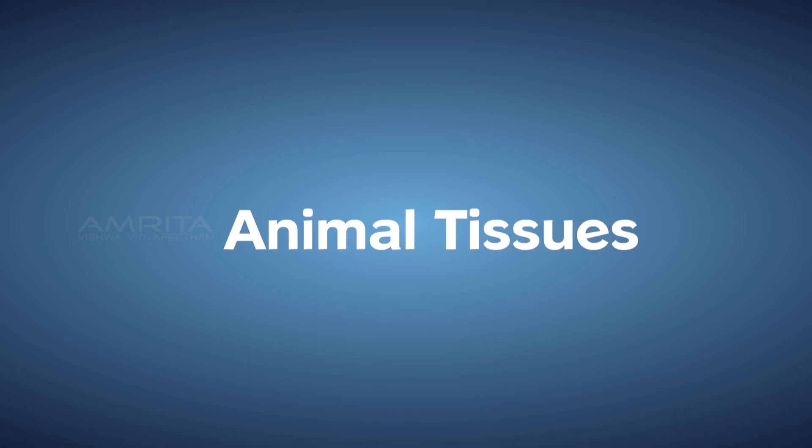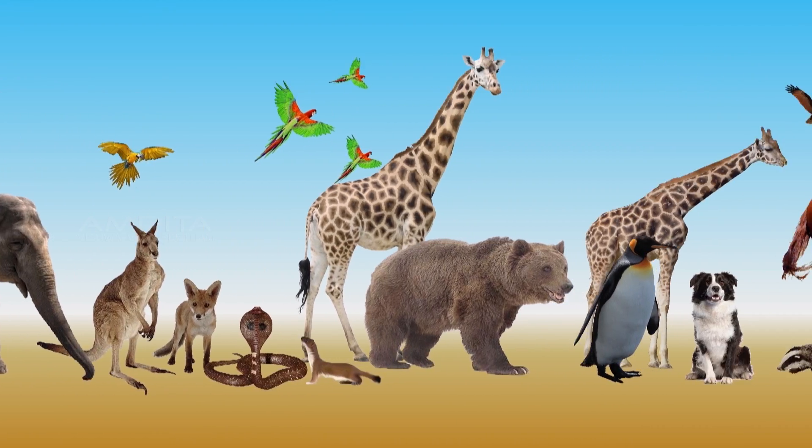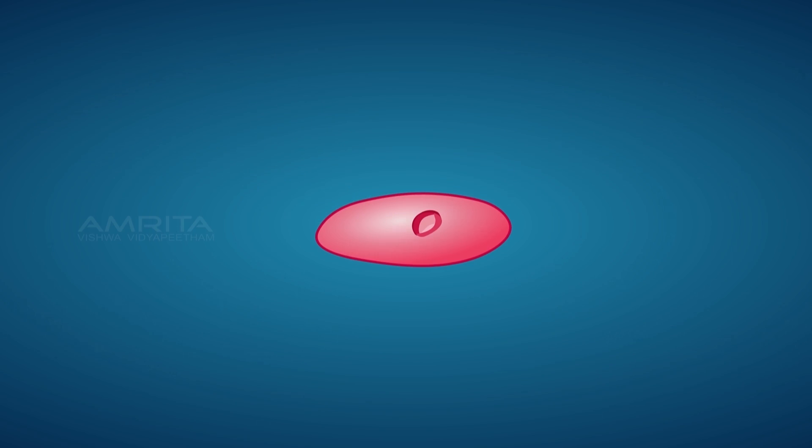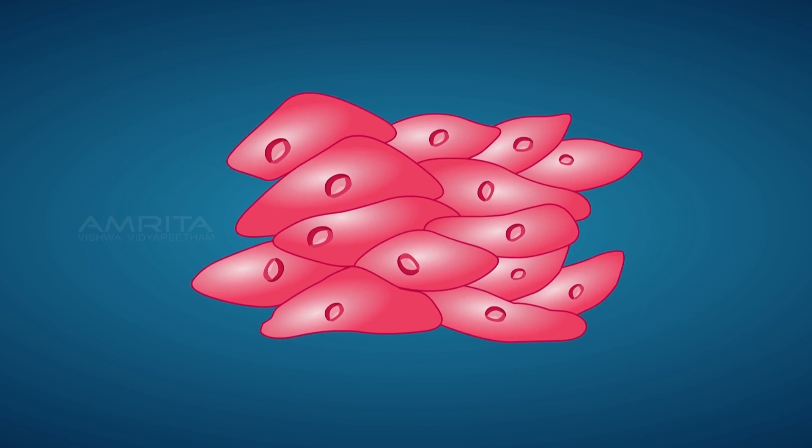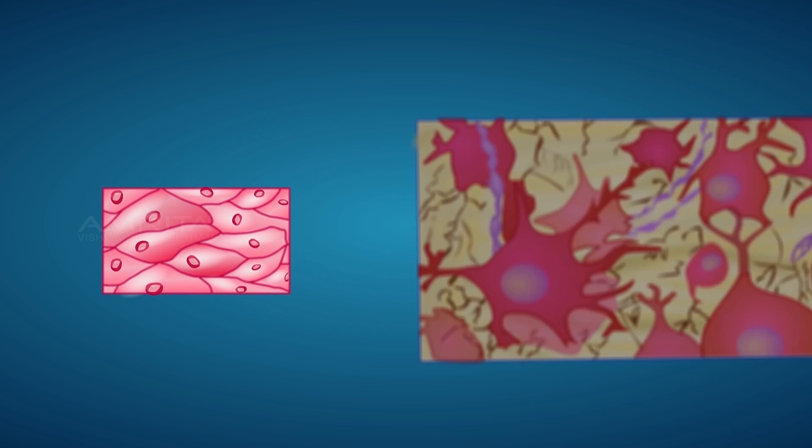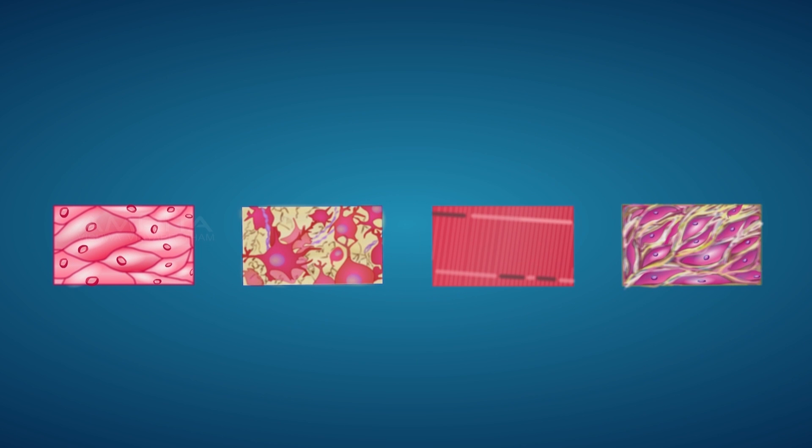Animal Tissues. Almost all animals are made up of tissues. Tissues are groups of cells that are similar in structure and work together to achieve a particular function. Animal tissues are grouped into four basic types: